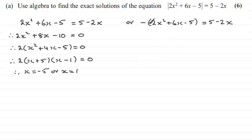And with this one, if I expand the bracket we have minus 2x squared, minus 6x plus 5 equals 5 minus 2x.